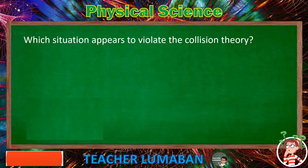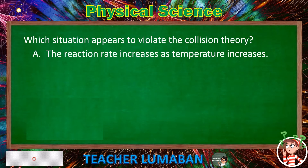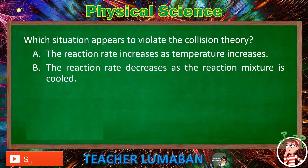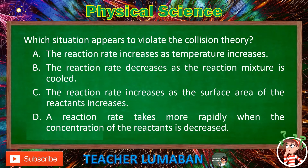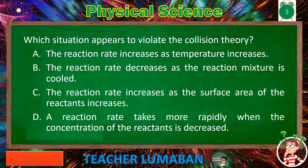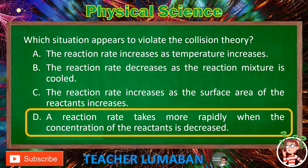Which situation appears to violate the collision theory? Letter A: the reaction rate increases as temperature increases. Letter B: the reaction rate decreases as the reaction mixture is cooled. Letter C: the reaction rate increases as the surface area of the reactants increases. Letter D: a reaction rate takes place more rapidly when the concentration of the reactants is decreased. The correct answer is Letter D. A reaction rate that takes place more rapidly when the concentration of the reactants is decreased appears to violate the collision theory.